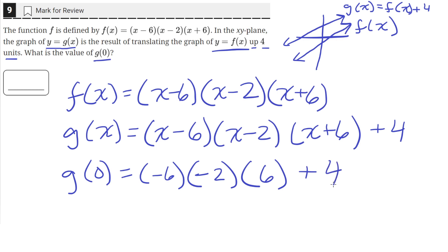And then we still have the plus 4. So then negative 6 times 6 is equal to negative 36. And negative 36 times negative 2 is equal to a positive 72. And then 72 plus 4 is equal to 76. So the value of g(0) is 76.